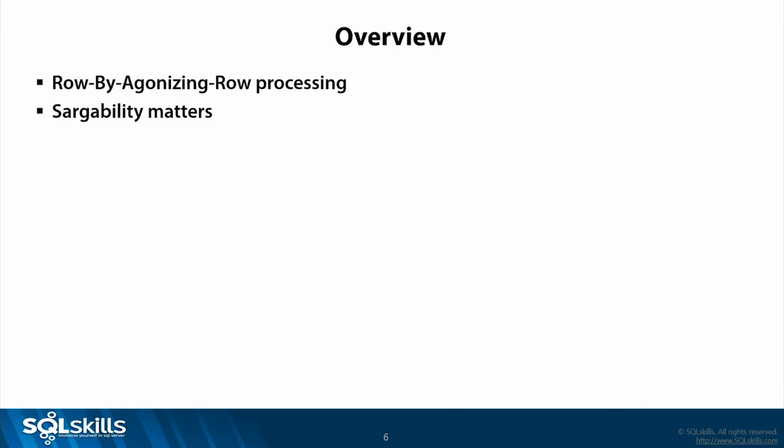We're going to go over a number of different row-by-row processing concepts and coding paradigms that are very common and lead to performance problems. As a consultant, one of the first things I look for when examining performance issues is: are there row-by-row constructs? Things that are going to make SQL Server have to run through result sets, iterating processes. Then we're going to talk about Sargability — 'search argument able' — where we design WHERE clauses that allow indexes to be seeked against rather than scanned.